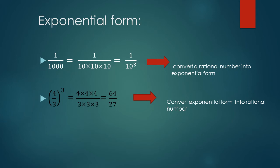But in second one, we are converting exponential form into the rational number. Rational number is in the form of fraction. Exponential form is in the form of exponent.